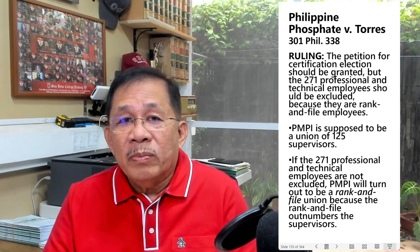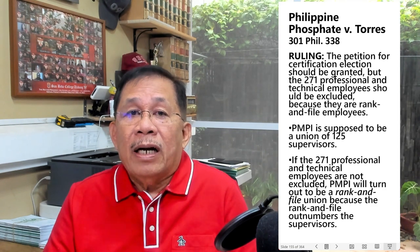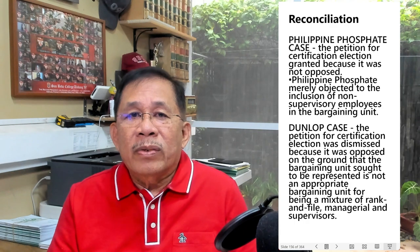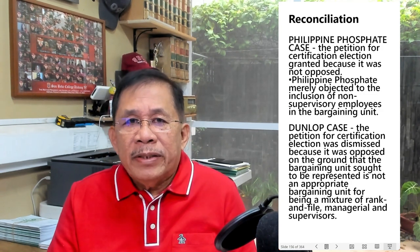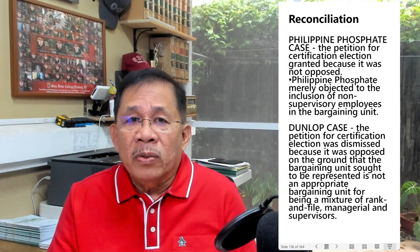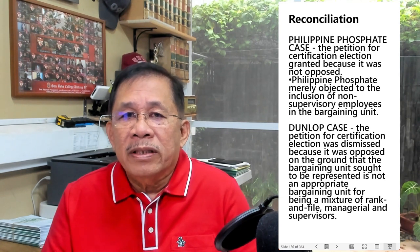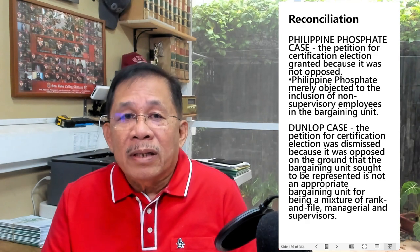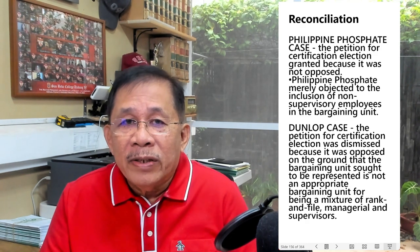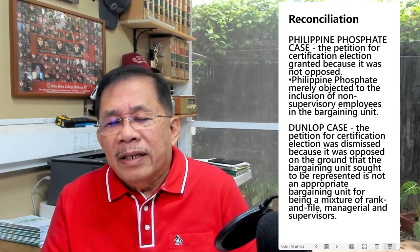The union was supposed to be a union of 125 supervisors. If the 271 rank-and-file employees are not excluded, the union will turn out to be a rank-and-file union because the rank-and-file outnumbered the supervisors. To reconcile the two cases: in Philippine Phosphate, the petition was granted because it was not opposed and the validity of the organization was not challenged — only the inclusion of non-supervisory employees was objected to. In Dunlop, the petition was dismissed because it was opposed on the ground that the bargaining unit was not appropriate and the validity of the organization was challenged for being a mixture of rank-and-file and supervisory employees.